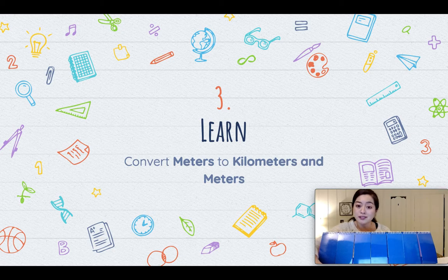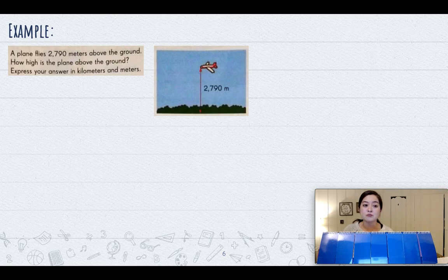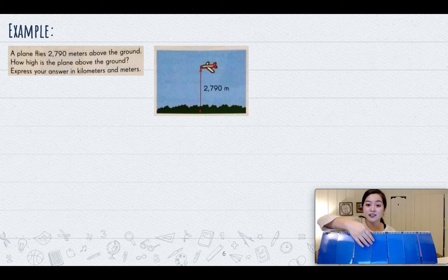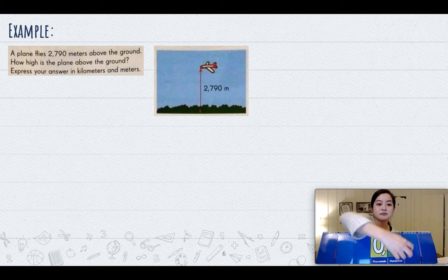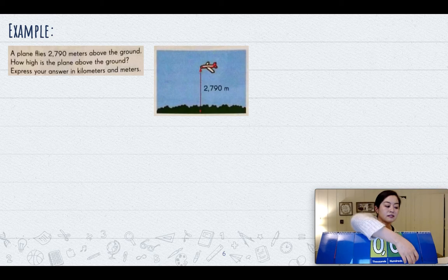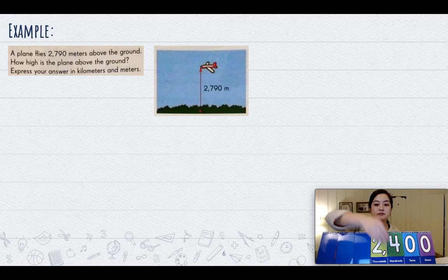We're going to convert meters to kilometers and meters. Let's take a look over here — it says a plane flies two thousand seven hundred and ninety meters above ground. How high is the plane above ground? Express your answer in kilometers and meters. I'm going to input the total amount of meters on my place value chart. We have the ten thousands, thousands, hundreds, tens, and ones places.